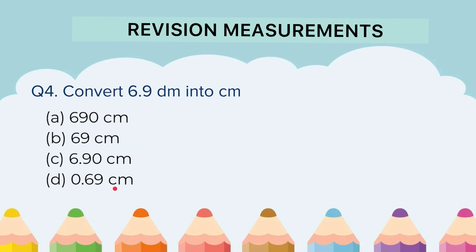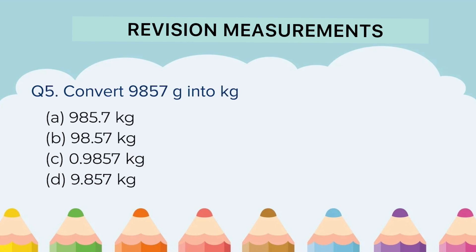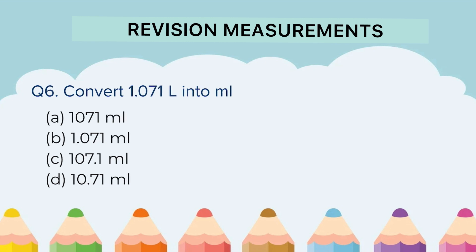Question 4: Convert 6.9 decimeters into centimeters. Here again you are given 4 options. Question 5: Convert 9,857 grams into kg. Identify the correct answer. Question 6: Convert 1.071 liters into milliliters. Do the conversion and find the correct answer out of these 4 options.